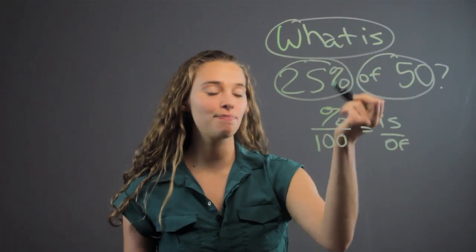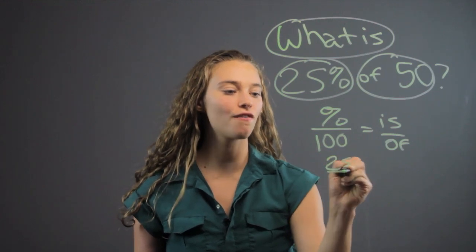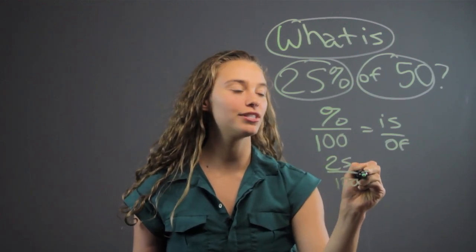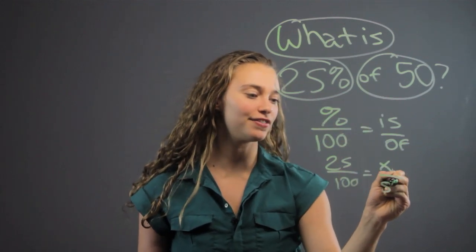We have 25 over 100 equals the is, which is the unknown, so put that as X over the of, which is 50.